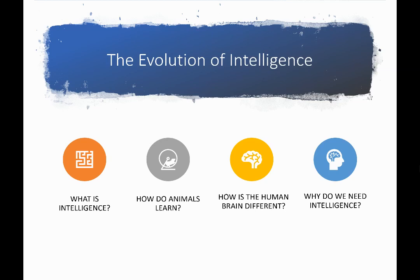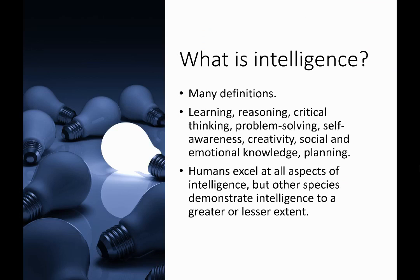Intelligence is central to the human condition. Why do we have it? Why do we need it? If you look it up, there are many different definitions of intelligence, but generally they include some of the following attributes: learning, reasoning, critical thinking, problem solving, self-awareness, creativity, social and emotional knowledge, and planning. Humans excel at all these different aspects of intelligence.